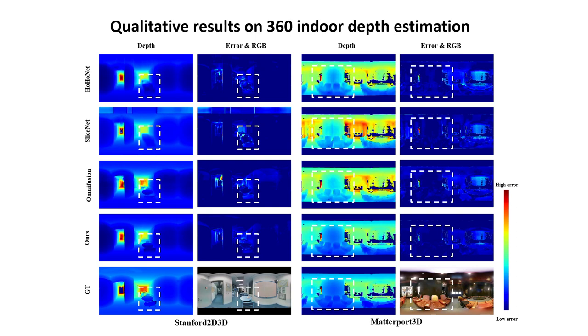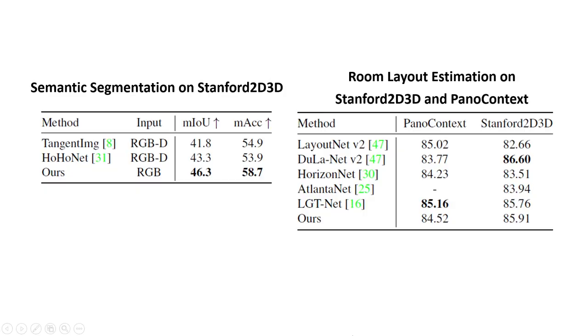Here are some qualitative results on 360 indoor depth estimation. Compared to the methods without distortion perception modules, PanelNet predicts accurate depth on the foreground objects. Compared to the tangent image method, PanelNet predicts continuous depth of the indoor structure.